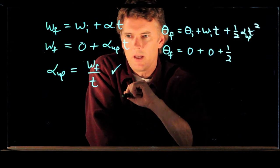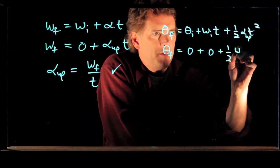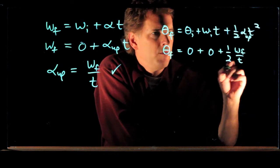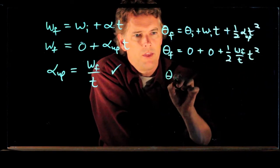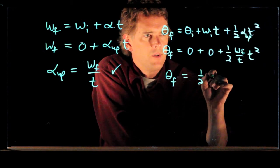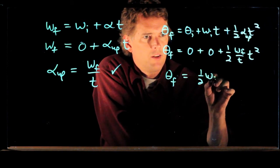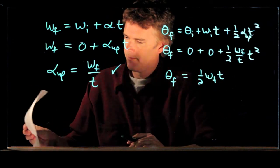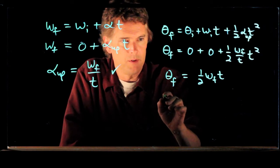Alpha up is omega final over t times t squared, and so we get theta final equals one half omega final times t. And now you can plug in those numbers.